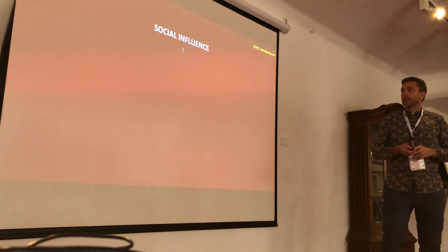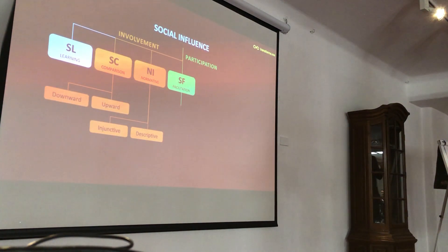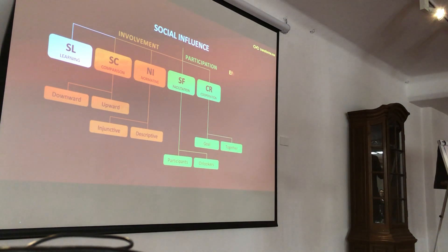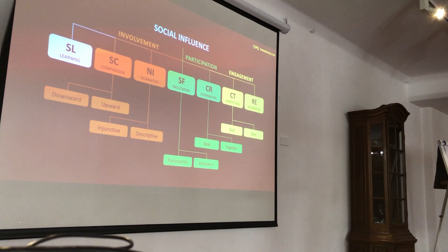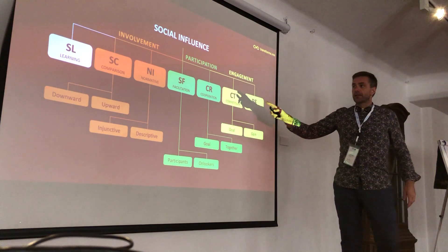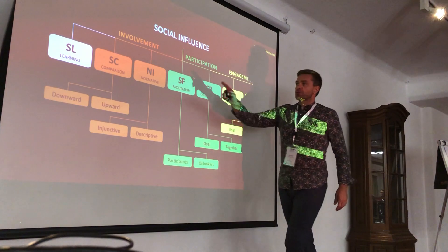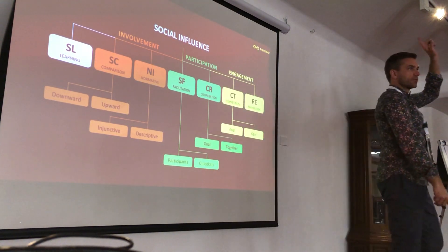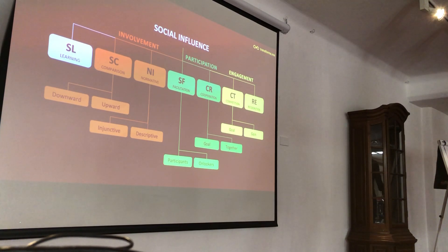Those are the seven social influence principles, and they also have dimensions. Social influence has many faces — that's one of the premises of our paper. Usually people refer to social pressure, social norms, social proof — but that's not all. We go deeper: there are seven principles, and most of them have sub-dimensions.